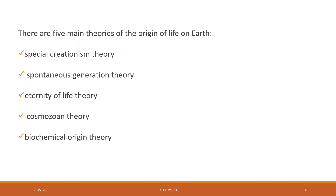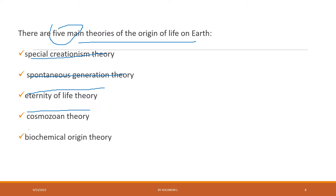There are five main theories of origin of life on earth. The first one is special creationism. The second is spontaneous generation. The third is eternity of life. The fourth is cosmozoal theory of origin of life, and the fifth is the biochemical or chemical origin of life theory. In the next slides, each of these theories will be discussed in detail.